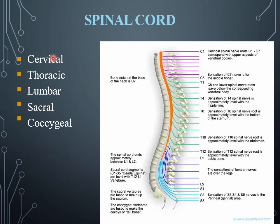The spinal cord contains different nerves: cervical, thoracic, lumbar, sacral, and coccygeal nerves. There are eight cervical nerves from C1 to C8. The sensation of the C7 nerve is in the middle finger. They are involved in the upper aspect of the vertebral bodies. You need to memorize the number of each nerve type for exam purposes.